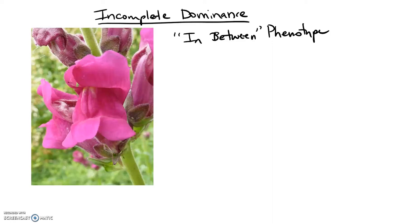In this video we're going to talk about some other types of inheritance besides complete dominance. The first example is incomplete dominance, which you can think of as an in-between phenotype. A pink snapdragon flower is the in-between phenotype from a cross between a white flower parent and a red flower parent. Rather than red being dominant over white, in this case we get an in-between phenotype.